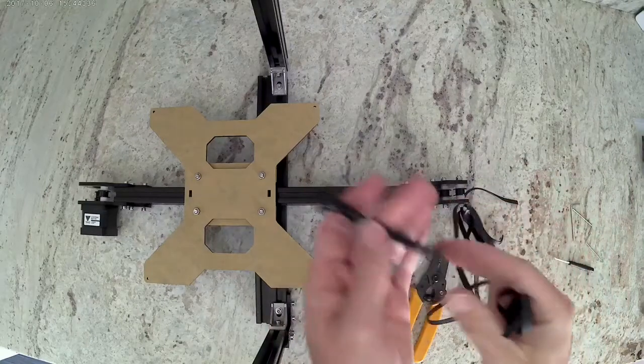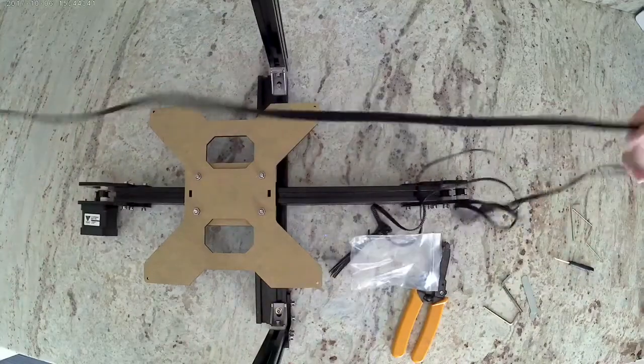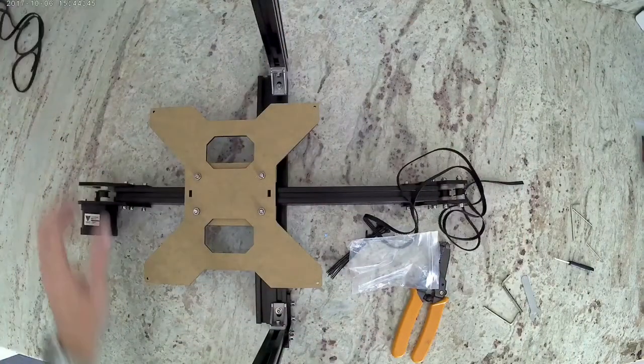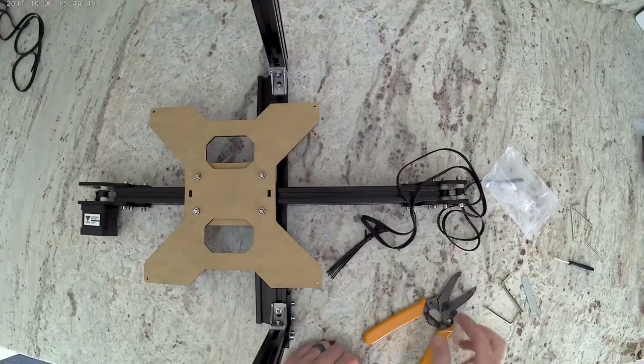We're going to use the zip ties to secure the belt, and you're actually going to have two belts in the bag. We only need one of them for this part, so go ahead and put one aside for when we do the X axis. You're also going to want to have something to cut your belt.